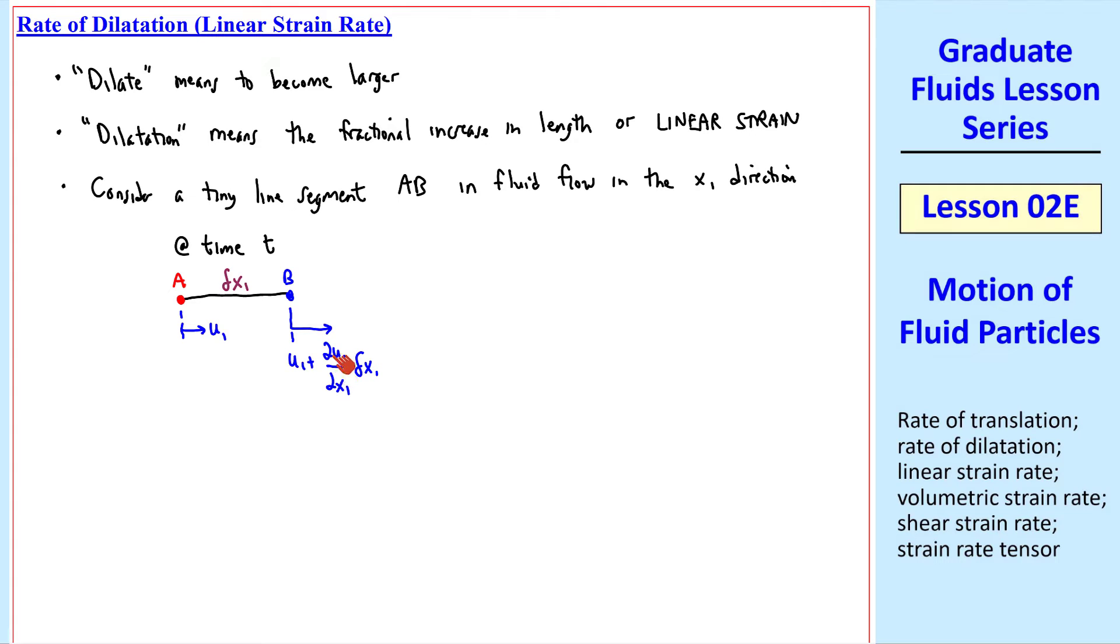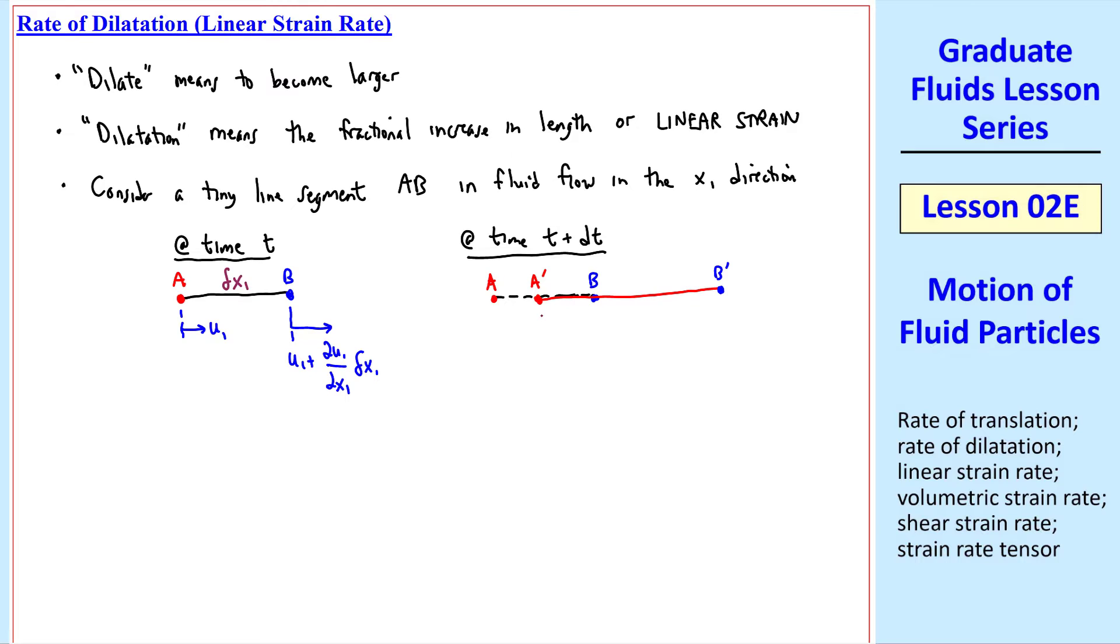We're ignoring higher order terms like del squared u1 del x1 squared, since we're going to let this segment shrink to zero size. This is at time t. At time t plus dt, a short time later, we'll use primed quantities. So here's our initial line segment with points A and B, but it has moved and stretched to this point A prime and this point B prime. Let's put on some dimensions.